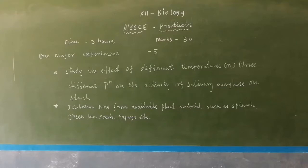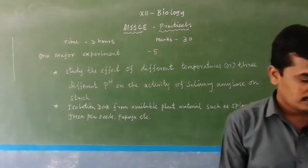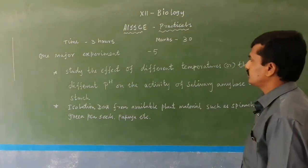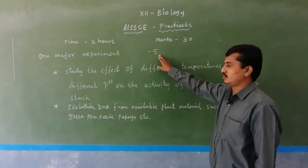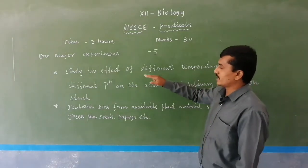The first one is a major experiment, worth 5 marks. Any one of two major experiments may come to you for your practical examination. According to the present COVID-19 situation, CBSE has reduced some practicals. According to this new revised curriculum syllabus, there are only two practicals for the major experiment. The first: study the effect of different temperatures or three different pH on the activity of salivary amylase on starch. The second: isolation of DNA from available plant material such as spinach, green pea seeds, papaya, etc.